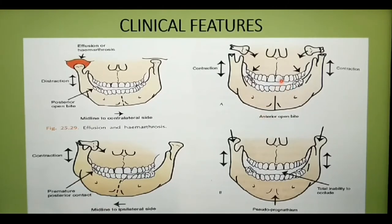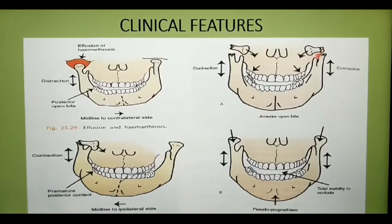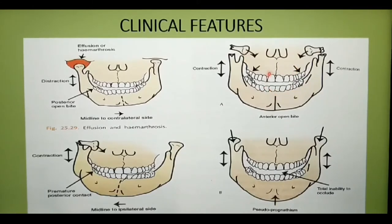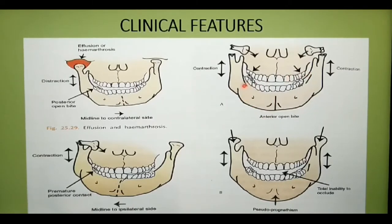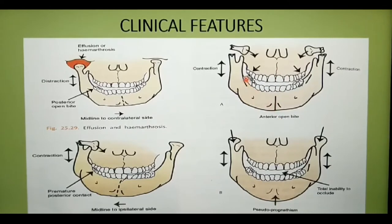The third diagram shows bilateral fracture dislocation, where the fractured condyles are dislocated medially. This will produce a premature posterior contact on both sides with no deviation — there is no shift in midline, but there is premature contact on both sides with anterior open bite.